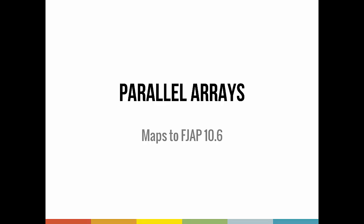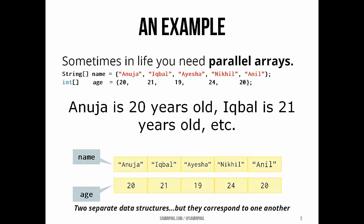Just one quick idea today. Sometimes in life, you just need parallel arrays. Suppose I want to keep a list of people's names and their ages. I can achieve this by using two separate arrays in which corresponding elements are related.